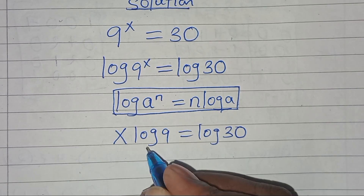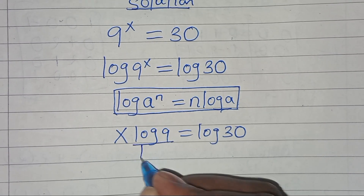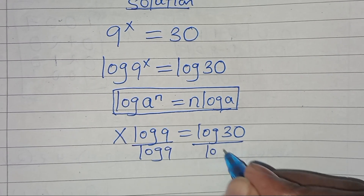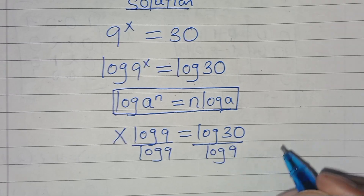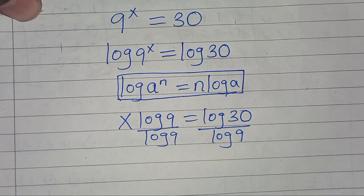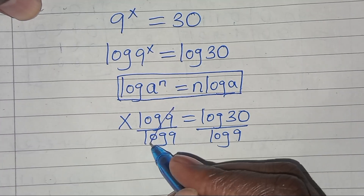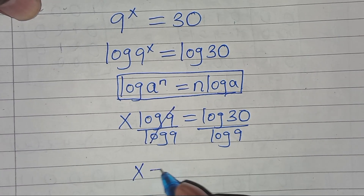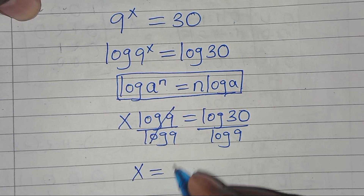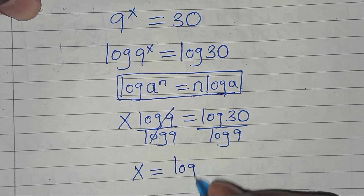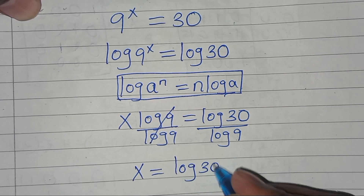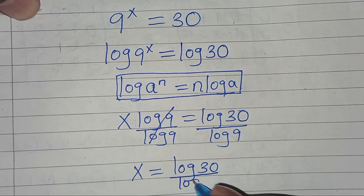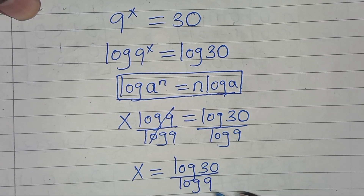So let's divide both sides by log 9. We also have log 9 on the left side, so simplifying log 9 and log 9, x will be equal to log 30 divided by log 9.